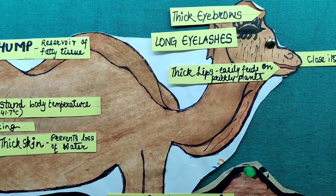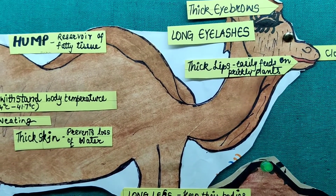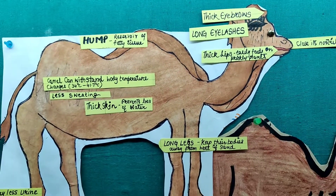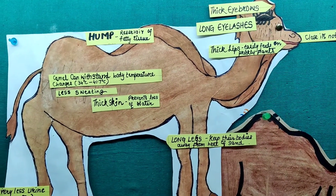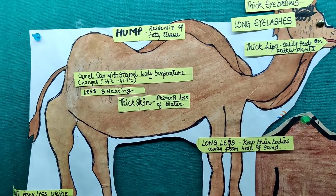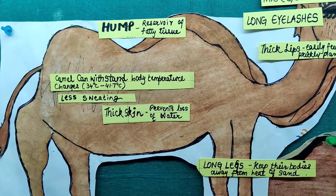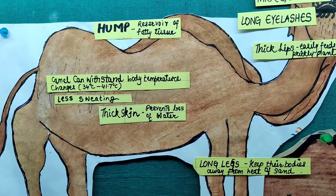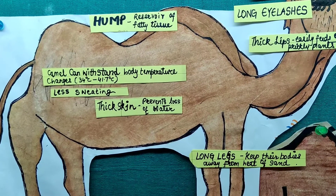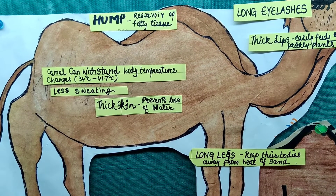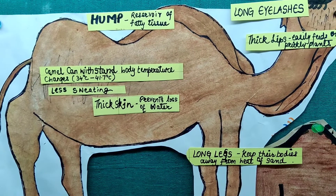Now let us focus on the thick lips. These thick lips help this animal to eat the cactus — the thorny cactus. Now let us get back to its back — the hump. The hump is basically a reservoir of fatty tissue. Whatever extra food it eats, it is going to store as fat in its hump.